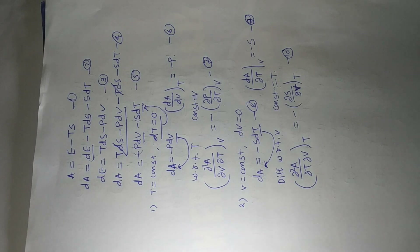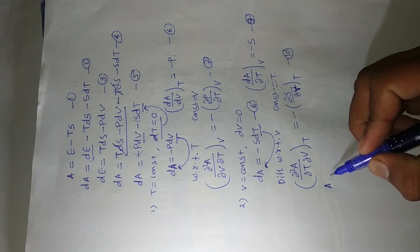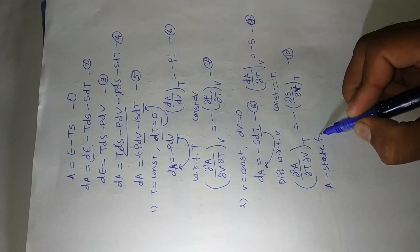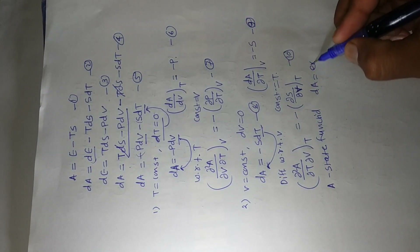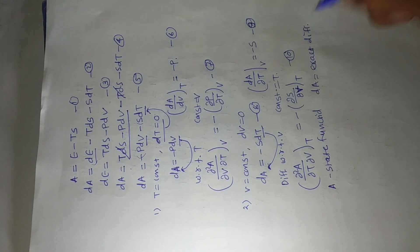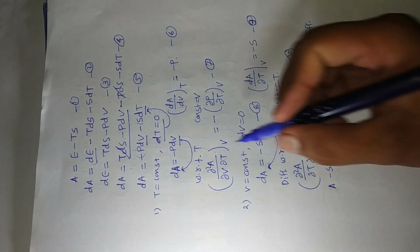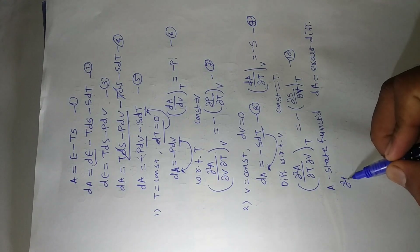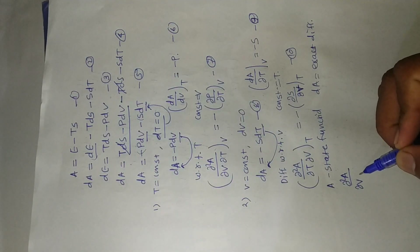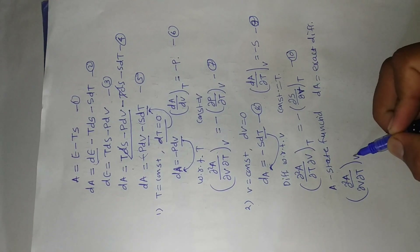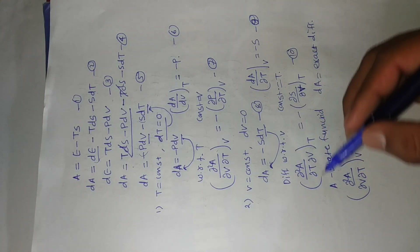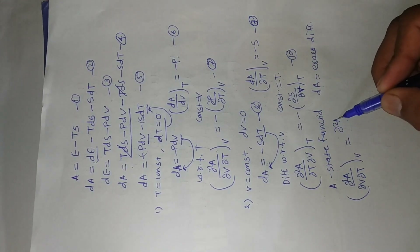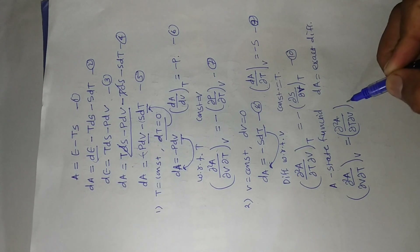Here we have the work function A. A is a state function, and the differential of A is an exact differential. Then this term — the mixed partial d²A/(dV·dT) at constant V — is equal to d²A/(dT·dV) at constant temperature. This is equation number 11: the order of mixed differentiation of A with respect to volume and temperature is interchangeable.